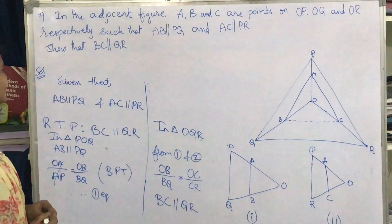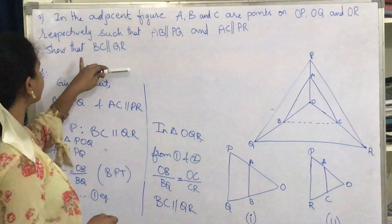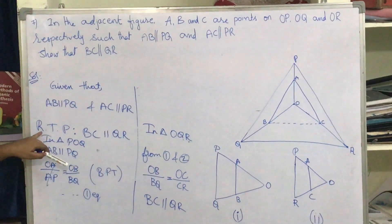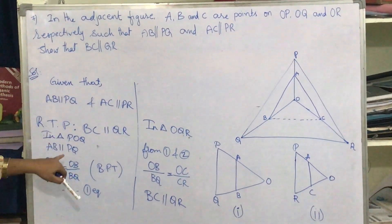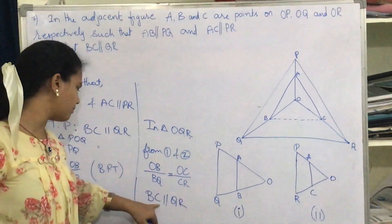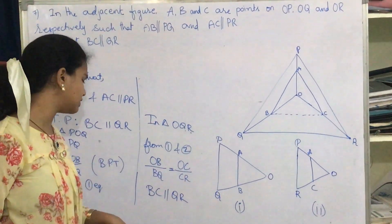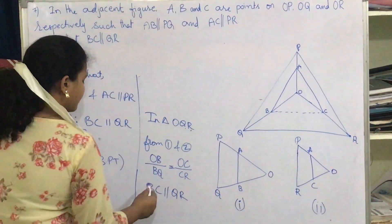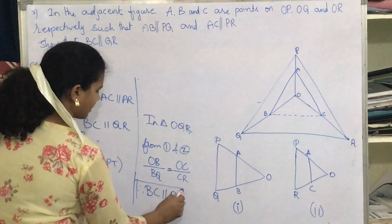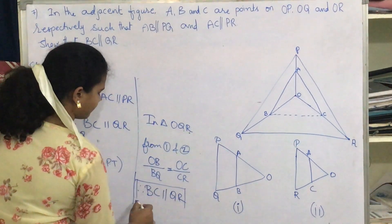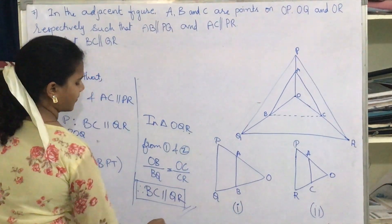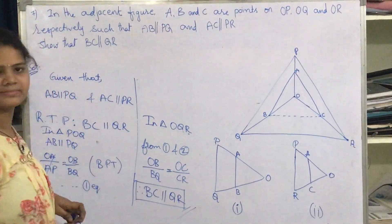Hence, I have proved that BC is parallel to QR. Therefore, BC is parallel to QR. Thank you.